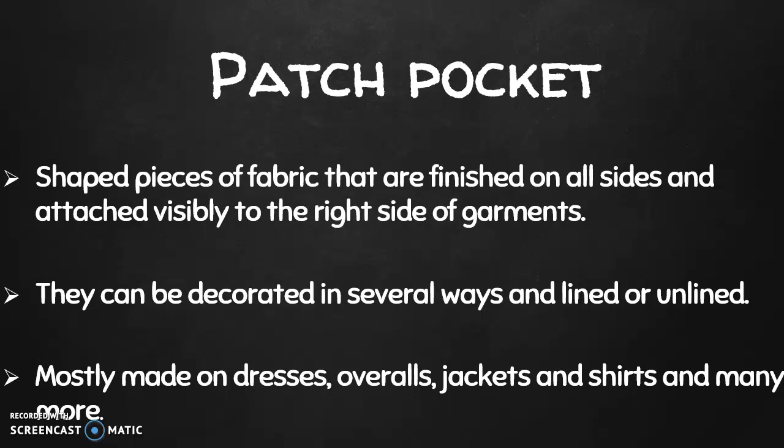Let's start by looking at patch pockets. These are shaped pieces of fabric that are finished on all sides and attached visibly to the right sides of garments. So patch pockets are usually seen at the right side or the outer part of the garment. They can be decorated in several ways and they are lined or unlined. When we talk of lined patch pockets, it means that an interfacing or a lining has been attached to the pocket before it is fixed or attached to the garment.